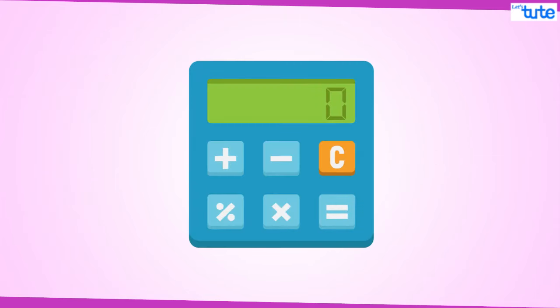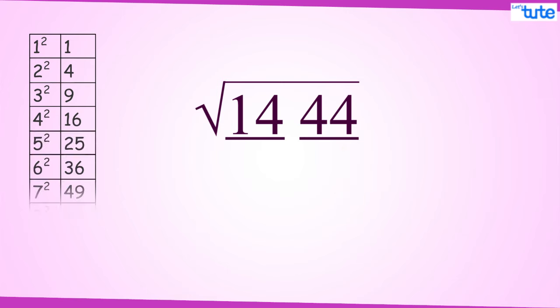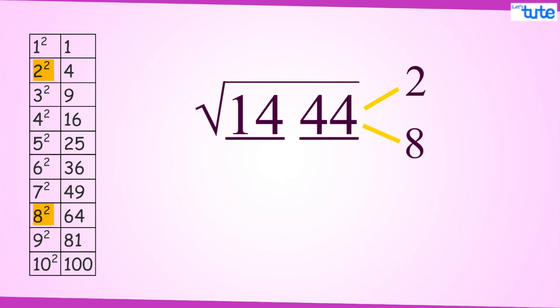Now let's take one more example. Find the square root of 1444. The first step is to make the pairs. So 44 and 14 will be 2 pairs. We have taken from right hand side. Now we have 4 in the unit place. So the square root of this number will have either 2 or 8 in its unit place.